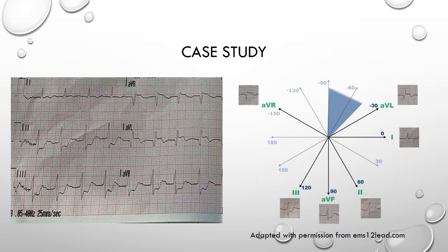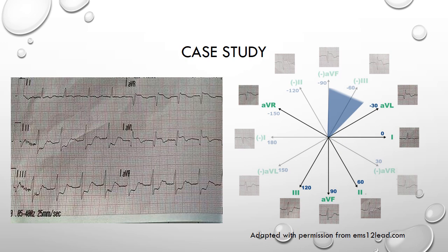You should also be able to see that the ST axis or vector is traveling directly away from our inferior leads, in particular leads 3 and AVF, and this is why we get reciprocal ST depression in these leads. What then if we created a view of the high lateral wall by following the Cabrera format of reversing AVR to create a mirror image in minus AVR and did the same with our inferior leads? By creating minus 3 and minus AVF, we now see that we have ST elevation in more than two contiguous leads from AVL in a counterclockwise direction towards AVR.